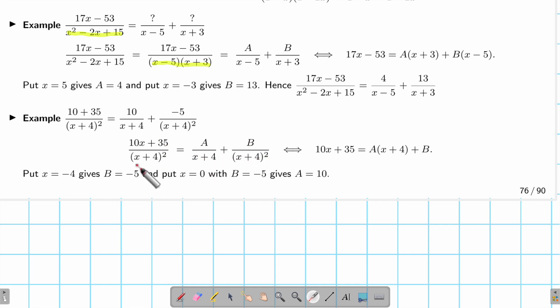Then I multiply the whole thing by (x+4)². This side gives me 10x + 45. On the other side, (x+4)² divided by (x+4) leaves one (x+4), and (x+4)² divided by (x+4)² cancels. So if I put x = -4, it gives me B. And if I put x = 0 with B, I get A. That's how you solve it.